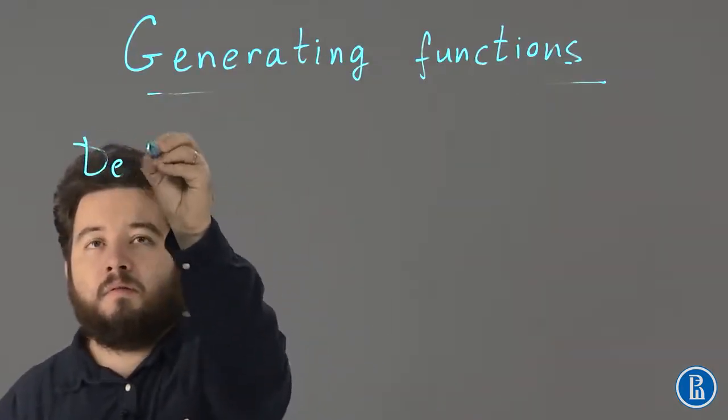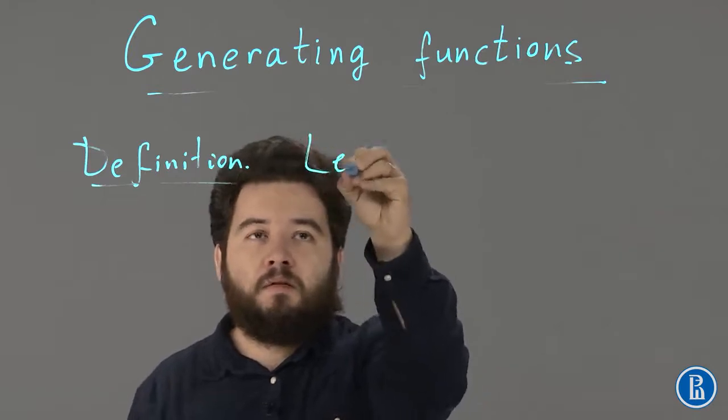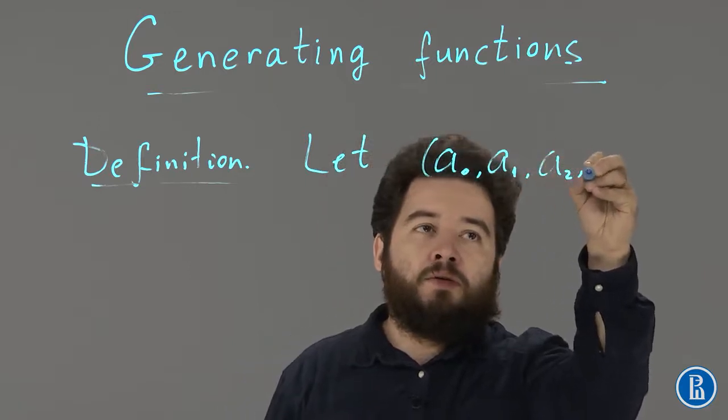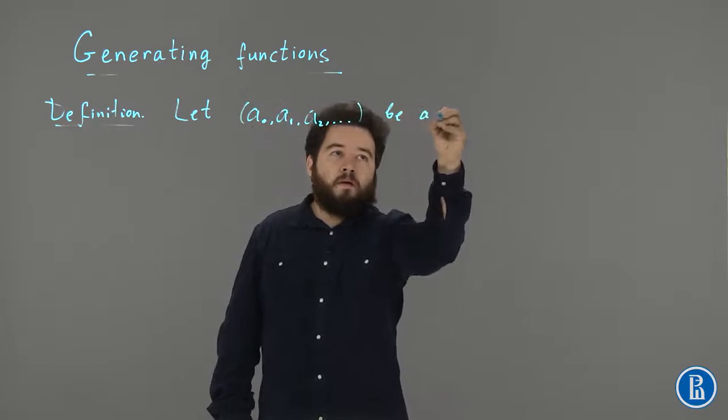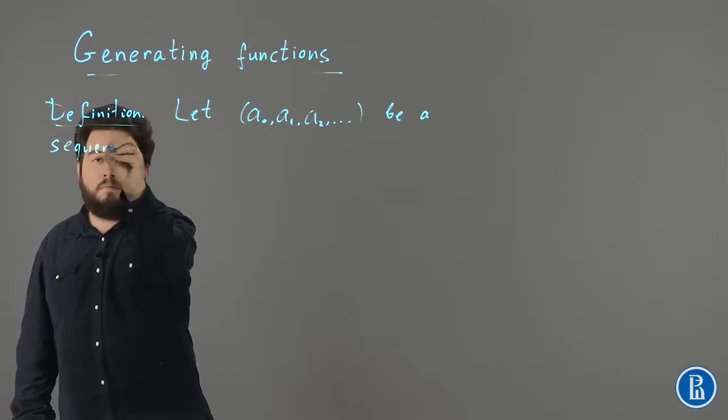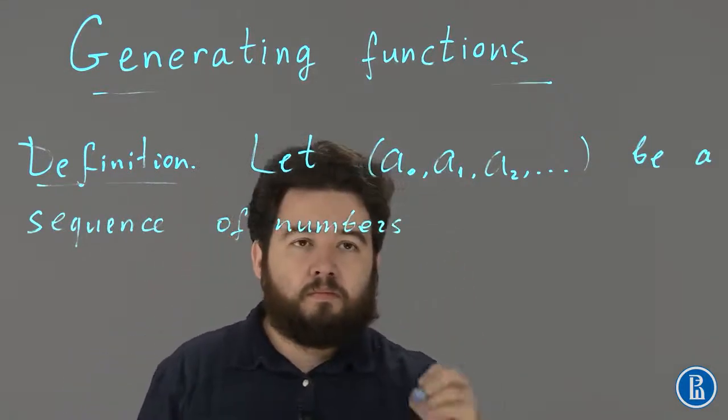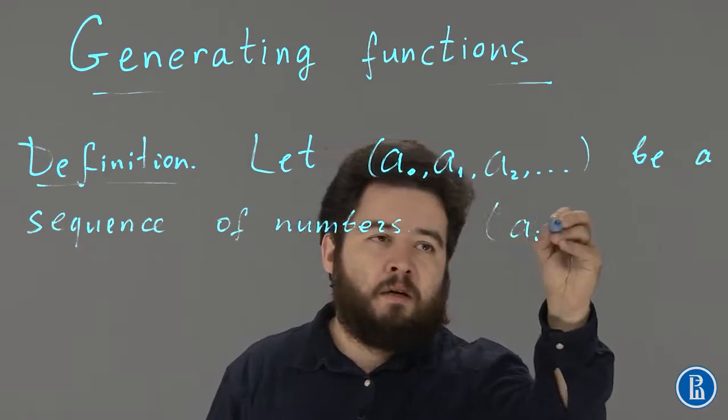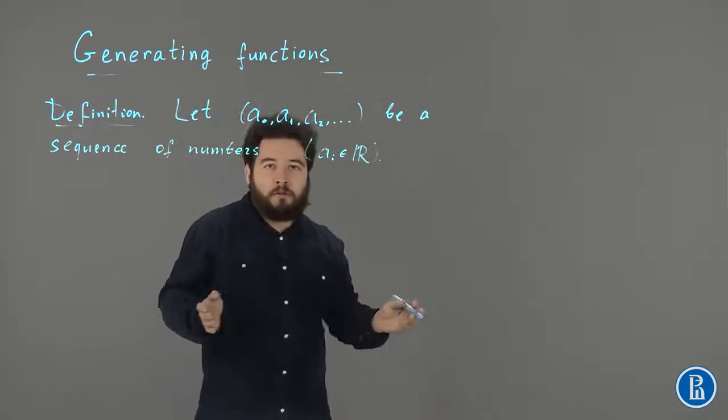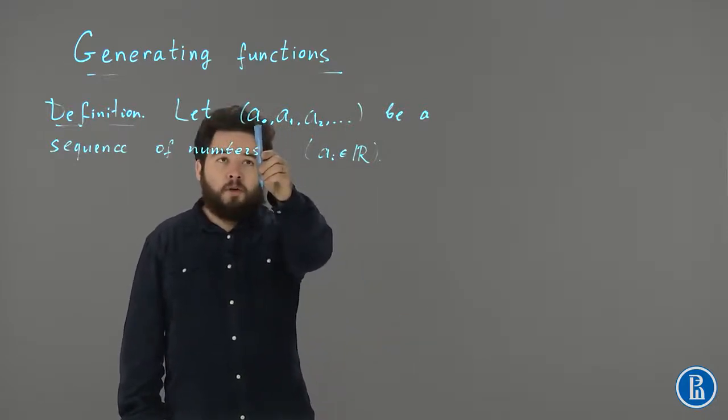So here's the definition. Let A0, A1, A2, etc. be a sequence of numbers. Well let's say that the A_i are just real numbers. We don't require them to be integer or whatever. And so this sequence is indexed by non-negative integers.